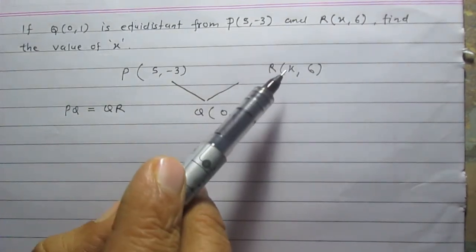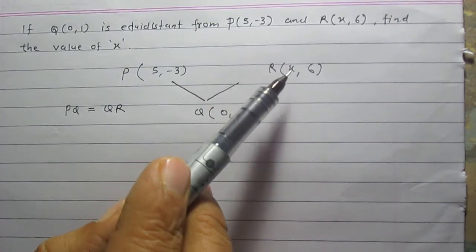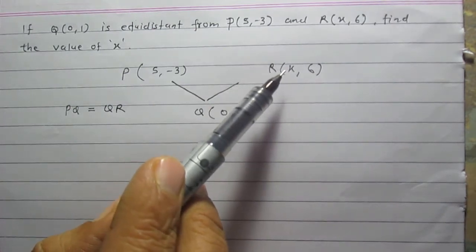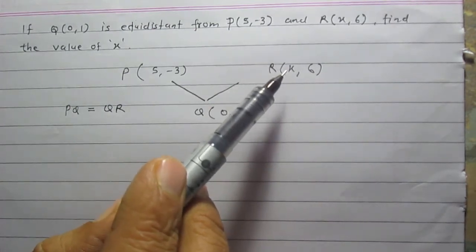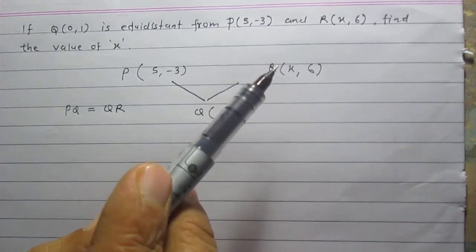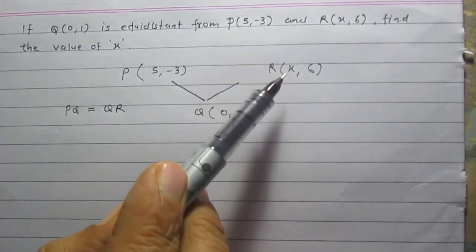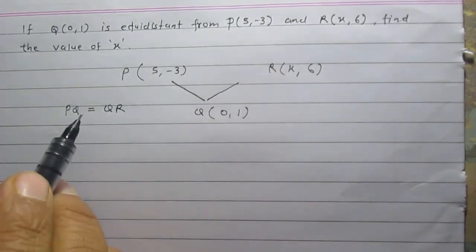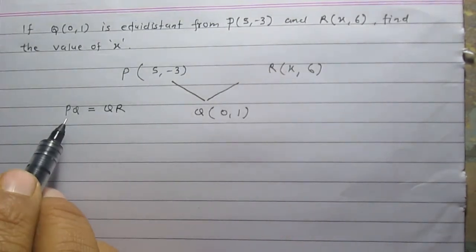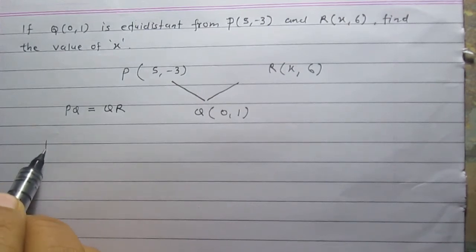The x coordinate of point R is x — it is a variable and we are to find the value of x. So first let us find distance PQ.